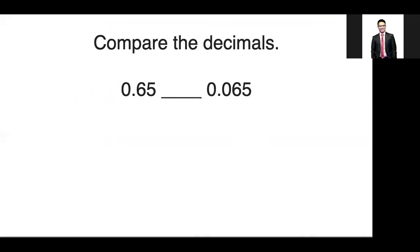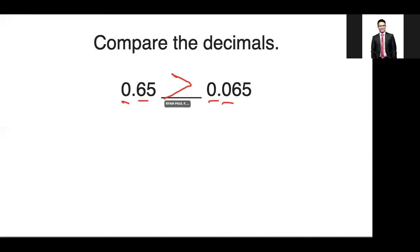Second to the last question: let's compare these decimals — is it greater than, less than, or equal? Comparing the digits, the first digits are 0, the same, so we move to the next digit: 6 and 0. Since 6 is greater than 0, therefore 0.65 is greater than 0.065.